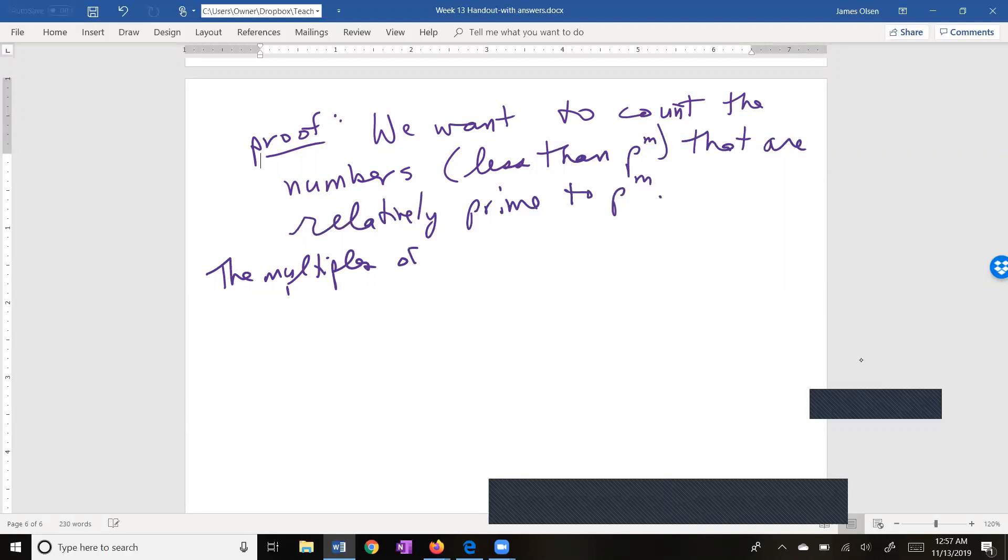We want to count the numbers, and they do have to be less than p to the m, that are relatively prime to p to the m. Now, if we look at the multiples of p, which are p, 2p, 3p, 4p, 5p, and so on up through p to the m minus one times p, which is p to the m. All of these, all of these multiples all share a factor with p to the m. Share a factor or divisor with p to the m. Obviously, they share a factor of p.